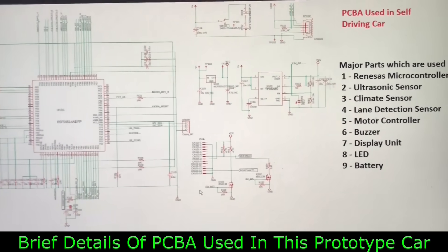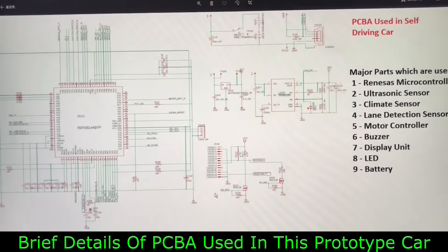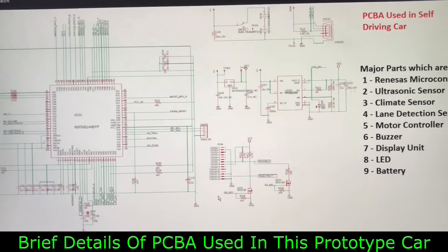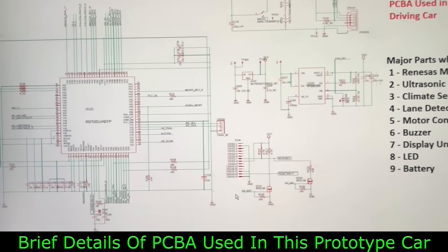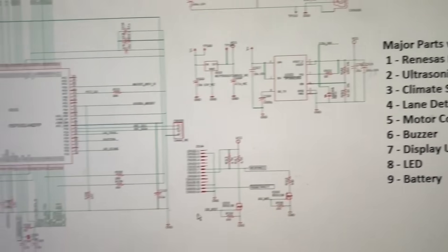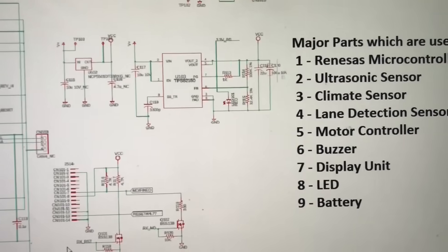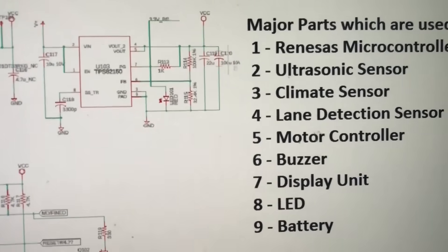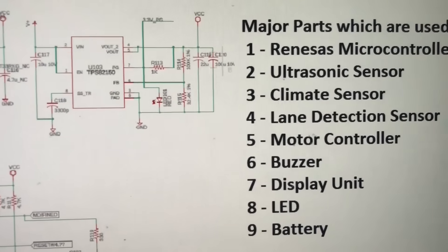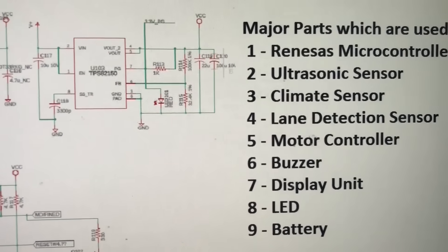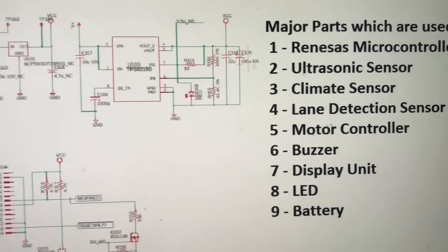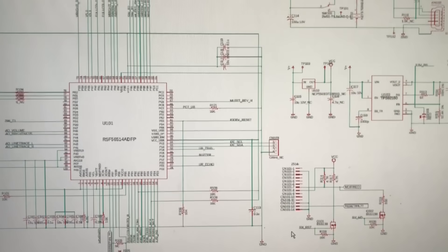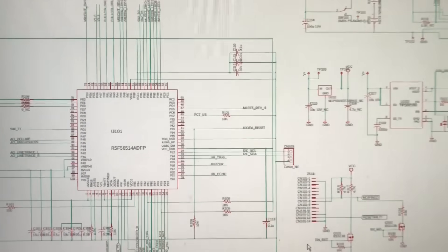You can see the hardware details of the self-driving car. My car's electronic board basically contains a Renesys microcontroller, an ultrasonic sensor, climate sensors, lane detection sensors, motor controllers, a buzzer, a display unit, LEDs, and batteries. You can see the detailed architecture of the hardware on the left side.